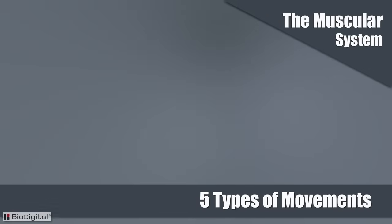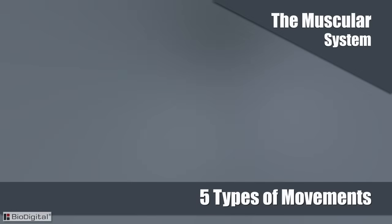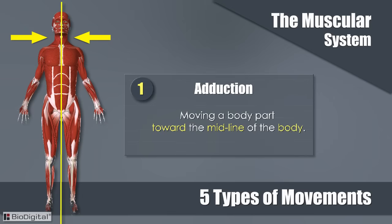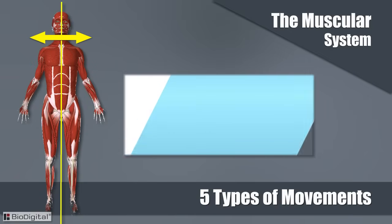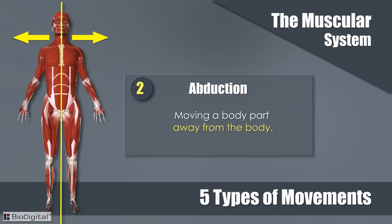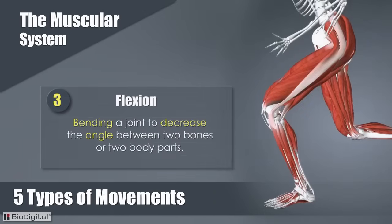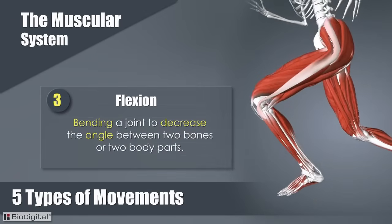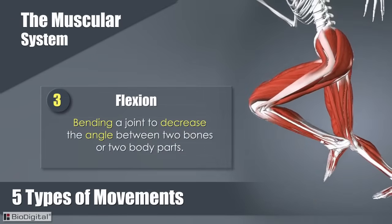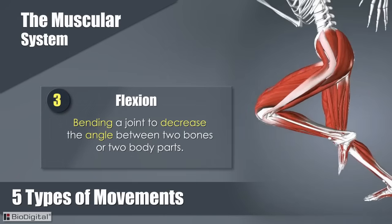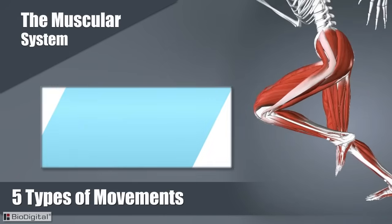Now let's look at the five types of muscle movements. Number one: adduction is the moving of a body part toward the midline of the body. Abduction is moving a body part away from the body. Flexion means bending a joint to decrease the angle between two bones or two body parts.